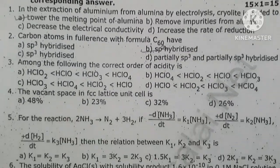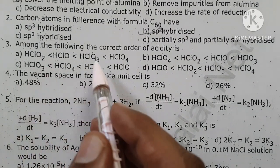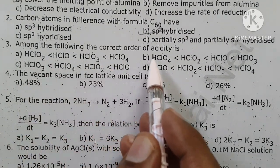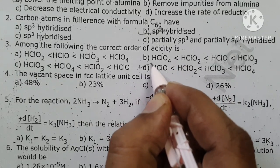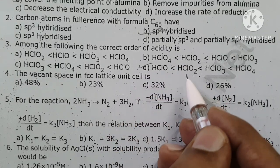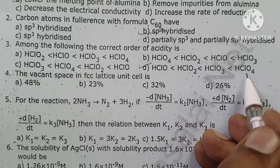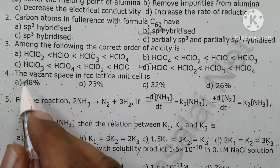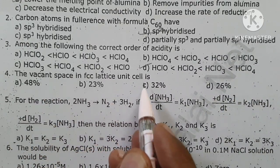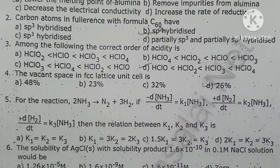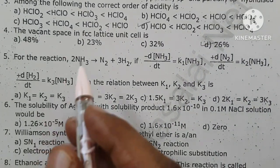Among the following, the correct order of acidity is: hypochlorous acid, chlorous acid, chloric acid, perchloric acid. The vacant space in an FCC unit cell is 26%.